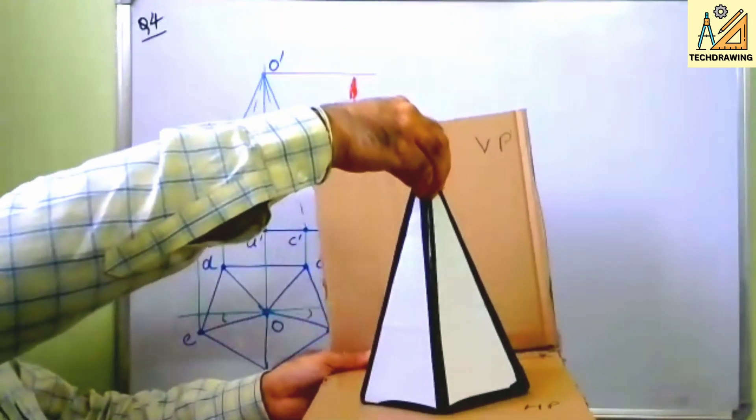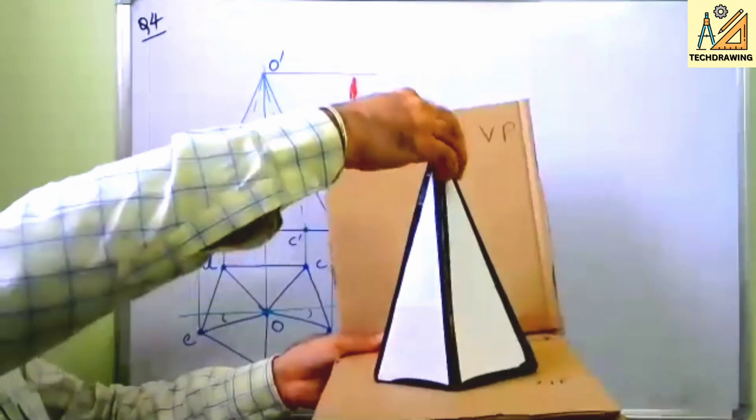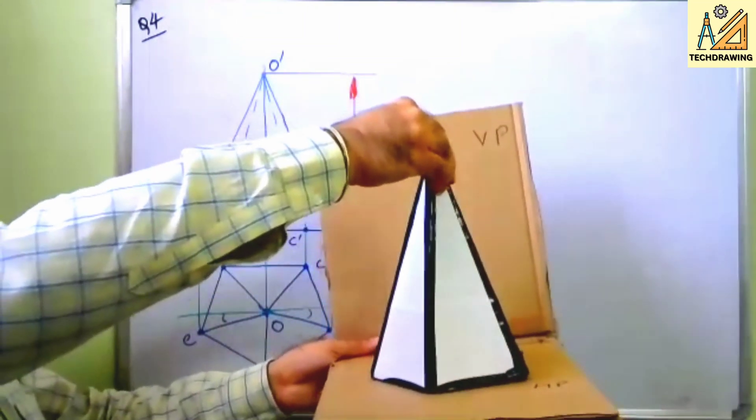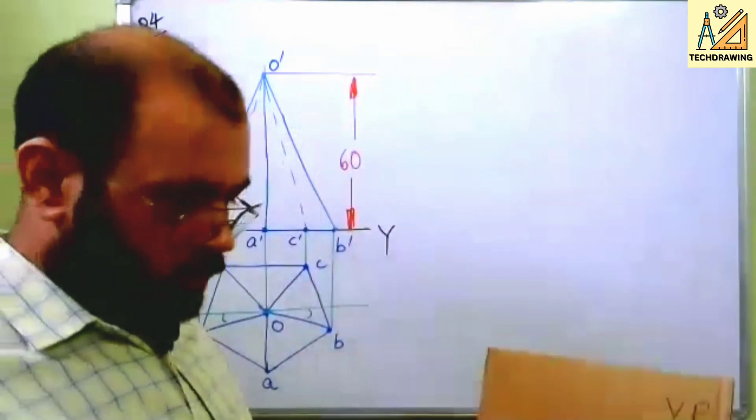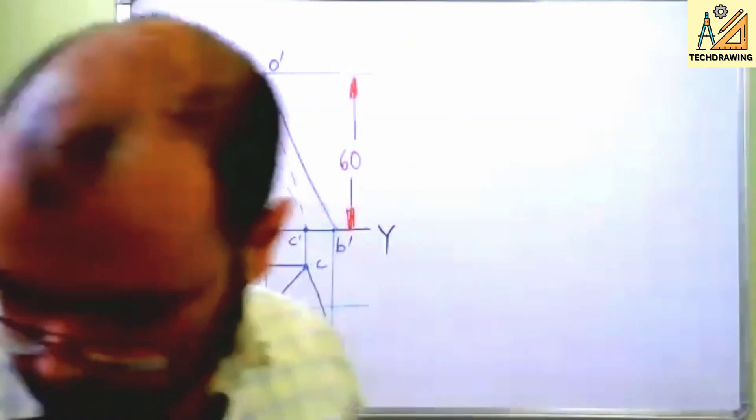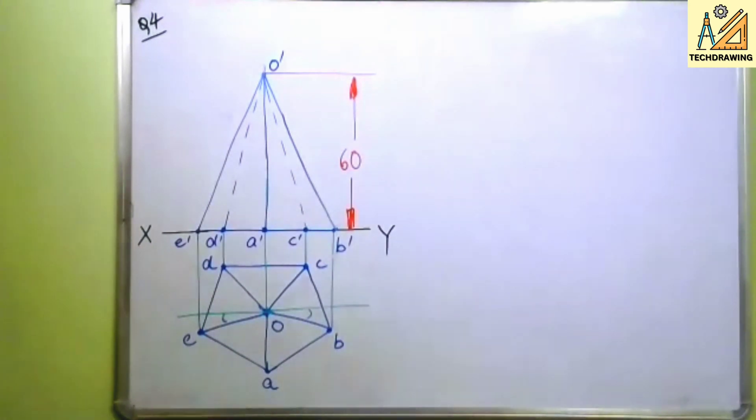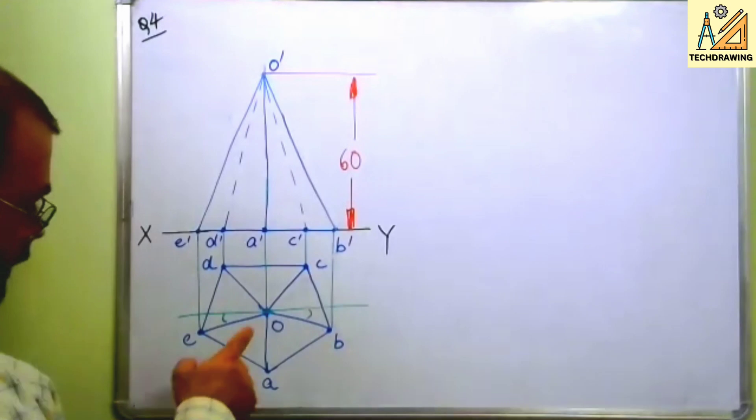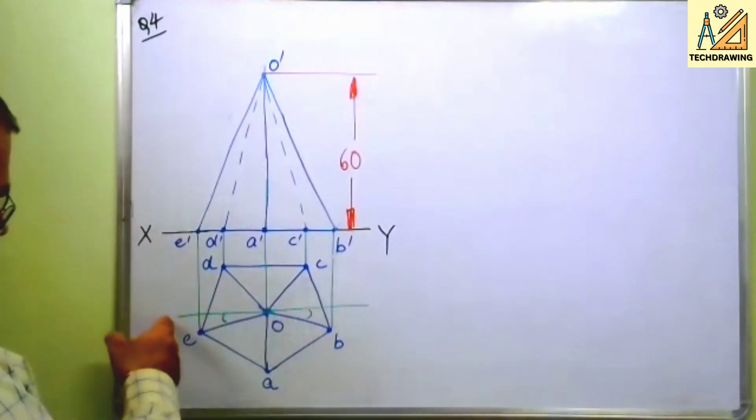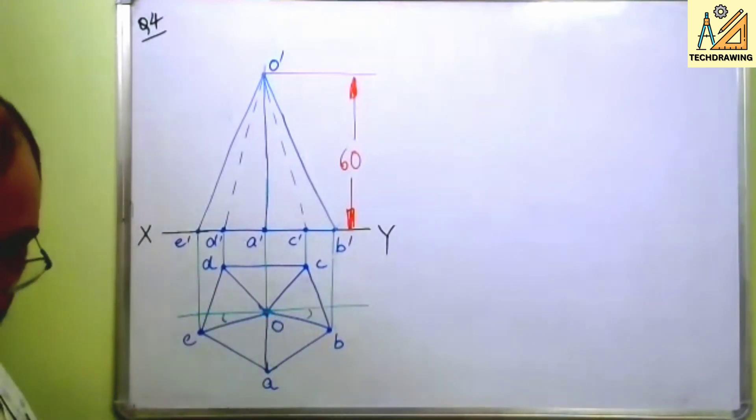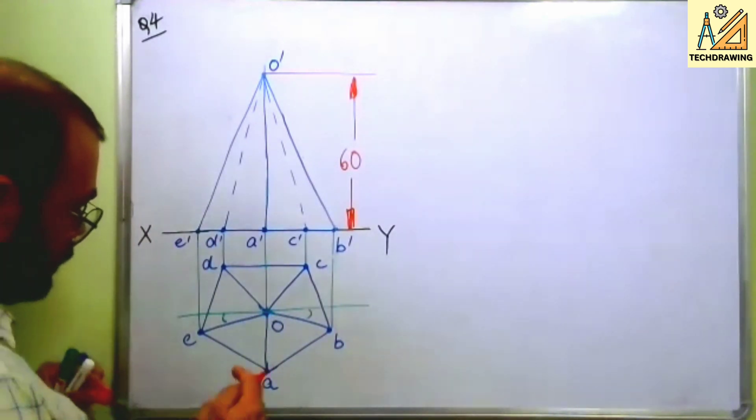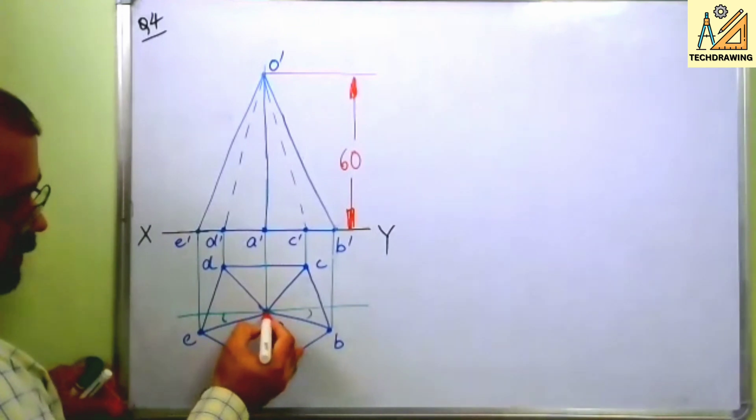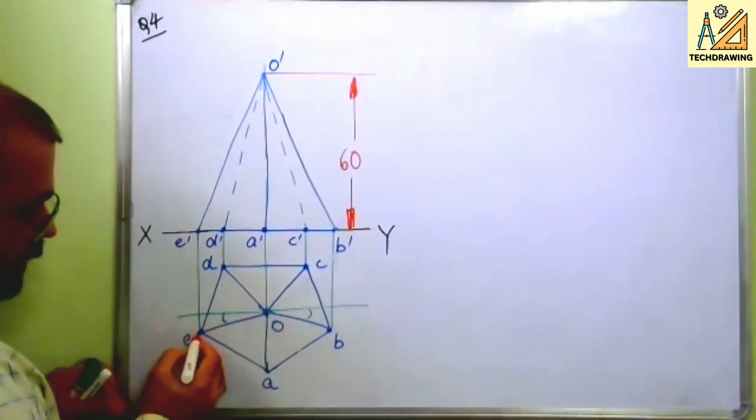So what we need to do, we will have to get the actual slant length. For this, just understand. You draw a horizontal from the center, keep your compass here at the center and open it till E.